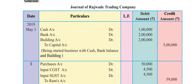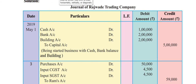This is the journal format for Rajwadi Trading Company - date, particulars, journal folio, debit amount rupees, credit amount rupees. For May 1st 2019: cash account debit Rs. 1 lakh, bank account debit Rs. 2 lakhs, building account debit Rs. 2 lakhs, to capital account credit - total Rs. 5 lakhs. Narration: being started business with cash, bank balance and building.